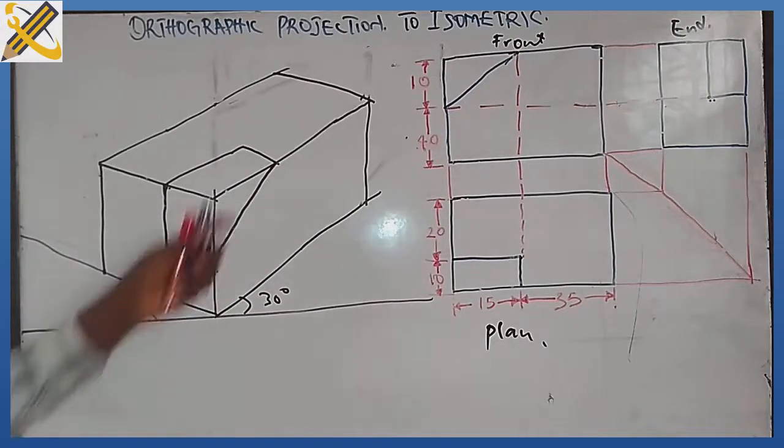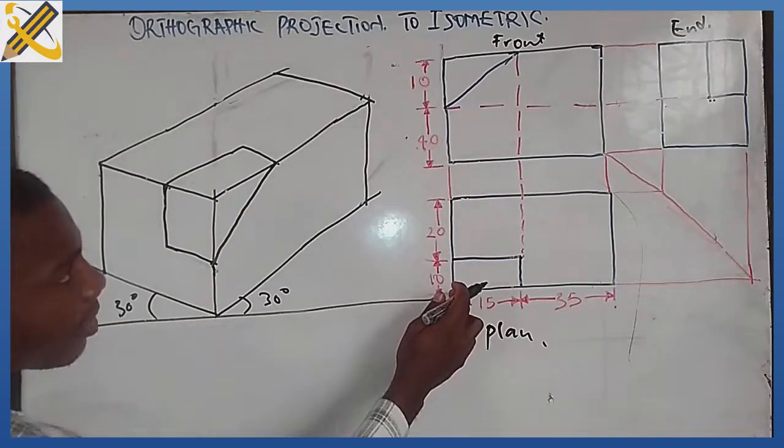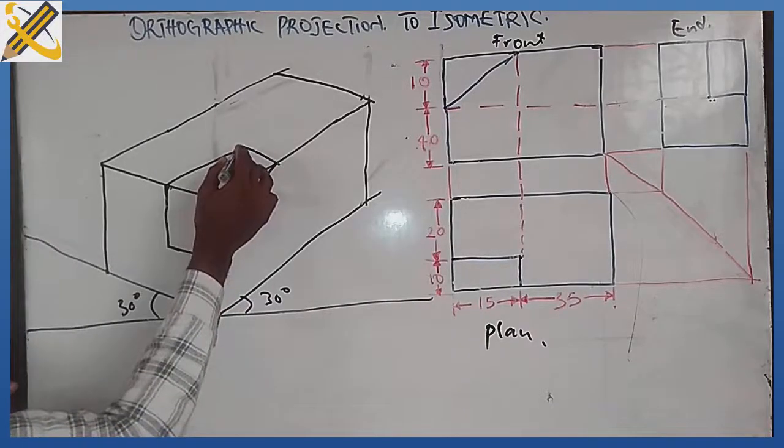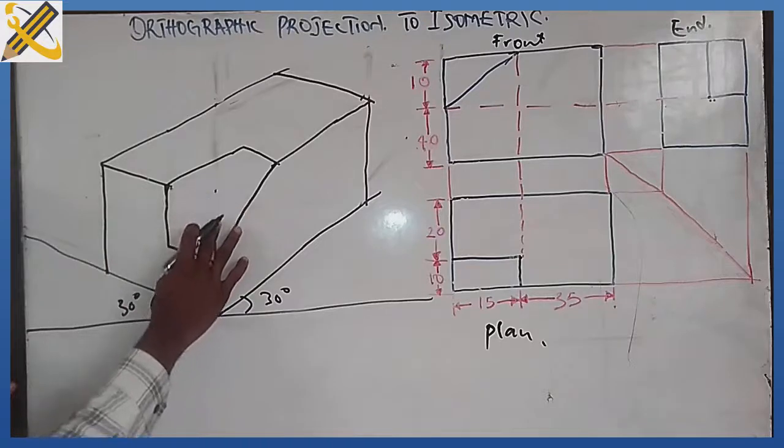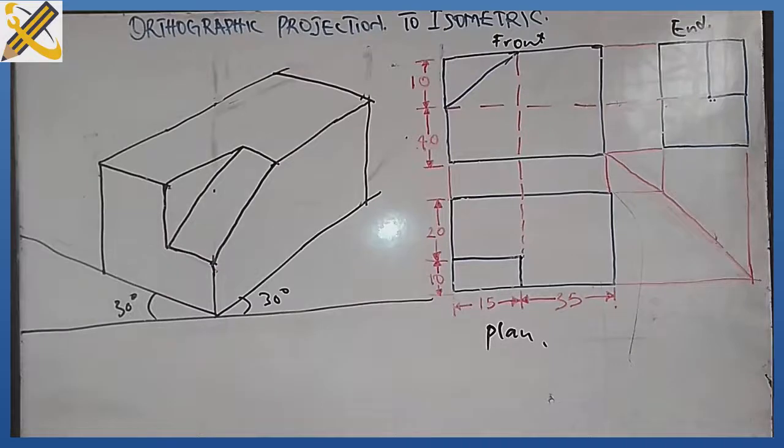But we cannot leave it in this way. You can see there is a reasonable thickness, which is this area. I'm going to erase this part, I'm erasing this part, then this also comes down like this. So this is our object in isometric view.